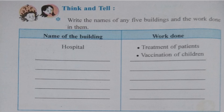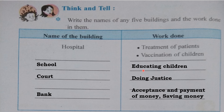Now next: 'Think and Tell.' Write the names of any five buildings and the work done in them. Name of the building and work done — for example, hospital: treatment of patients. School: educating children. Court: doing justice. Bank: acceptance and payment of money, and saving money. These are the works done in those buildings. You can write down your answers here.